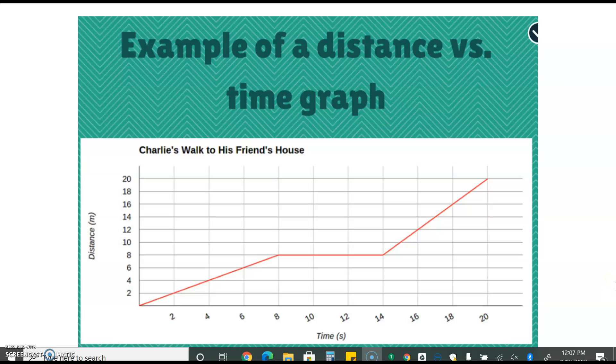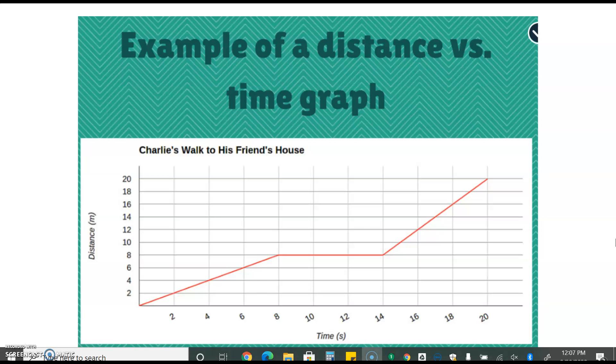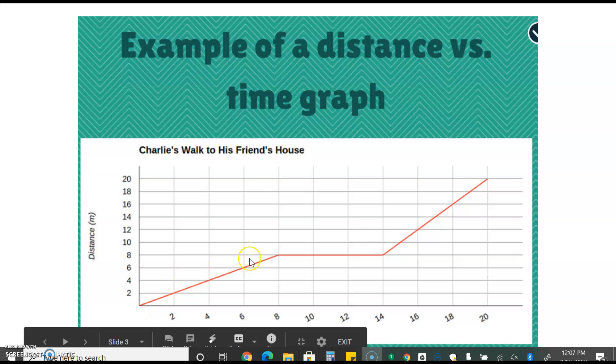Here is an example of a distance versus time graph. This is graphing Charlie's walk to his friend's house. Our distances in meters are here on our y-axis and our time is measured on our x-axis. You will notice that Charlie starts at zero and works his way all the way up to 20 meters and it takes him 20 seconds to walk those 20 meters.